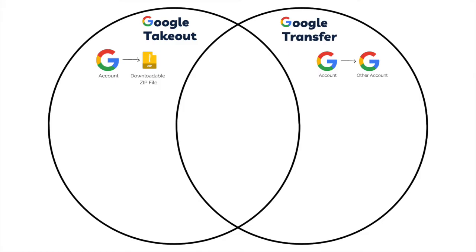Let's take a look at a Venn diagram comparing the two and see which one would be best for you. Google Takeout creates a downloadable zip file, and Google Transfer moves your Google account to a second Google account. Looking at how these two options are the same: the original Google account files will still live there — they do not get deleted in this download or transfer. The original files will stay on that account until it is deactivated or deleted. Just because you use Google Takeout or Google Transfer doesn't mean you're deleting your account. It's like making a copy.